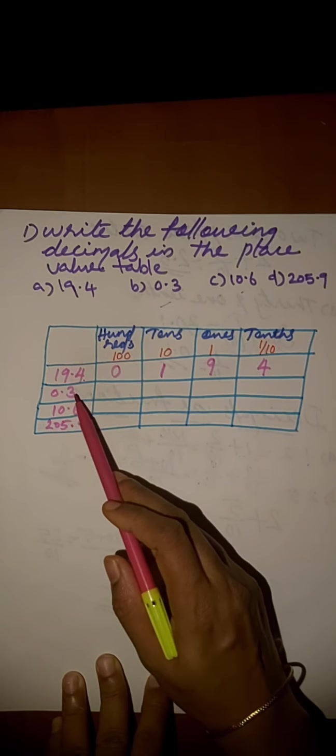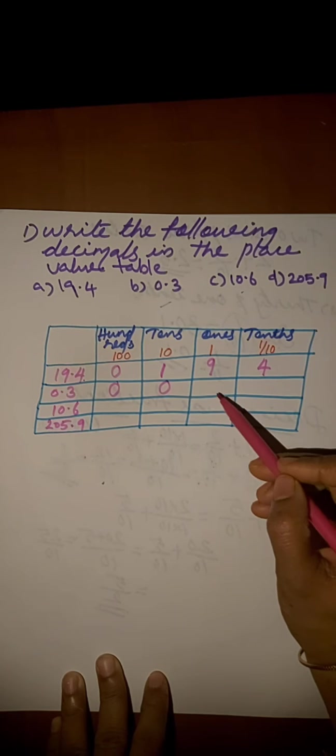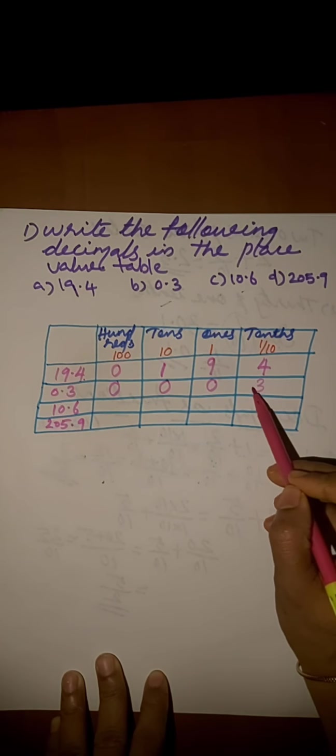Next question, 0.3. Hundreds place is 0, tens place is also 0, ones place 0, tenths place is 3.